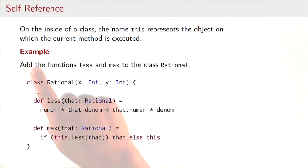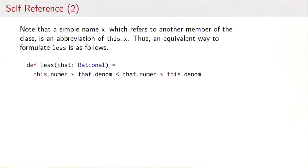So we've seen that on the inside of a class, the name 'this' represents the object on which the current method is executed. And you've seen that 'this' is essential for certain operations such as maximum where we have to return the whole rational number as a result.